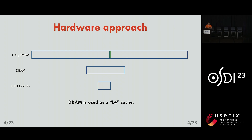In modern hardware, a different solution has become available: handling the different tiers purely in hardware. The CPU considers DRAM as a sort of L4 cache. When doing a load or a store, the CPU first looks for data in its CPU caches. If not found there, it looks in DRAM. If not found in DRAM, it fetches from the slow tier. On the way back, it caches the data in DRAM and in the CPU.